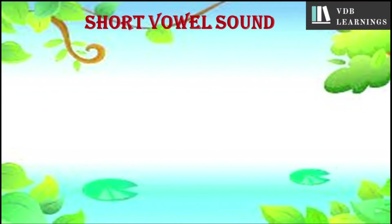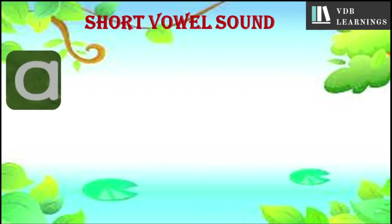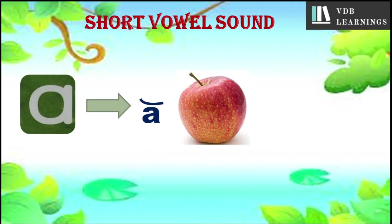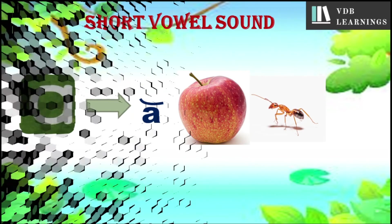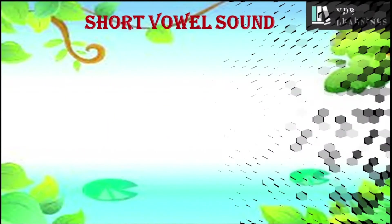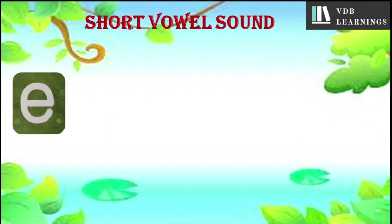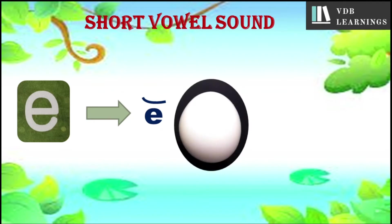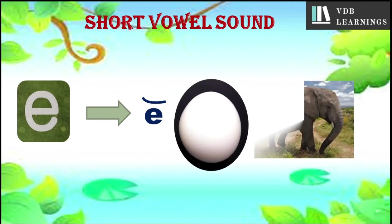First, short vowel sound. That is A — the sound is 'a'. Examples: apple, ant. Next is E — the sound is 'e'. Examples: egg, elephant.